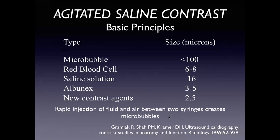Agitated saline contrast is created by the rapid injection of fluid — usually saline, though other fluids can be used — with a small amount of air, anywhere from about 0.05 up to 0.1 milliliters. You don't want to use too much air. You rapidly inject the mixture between two syringes to create the agitated saline contrast, then inject it rapidly before the bubbles dissipate.